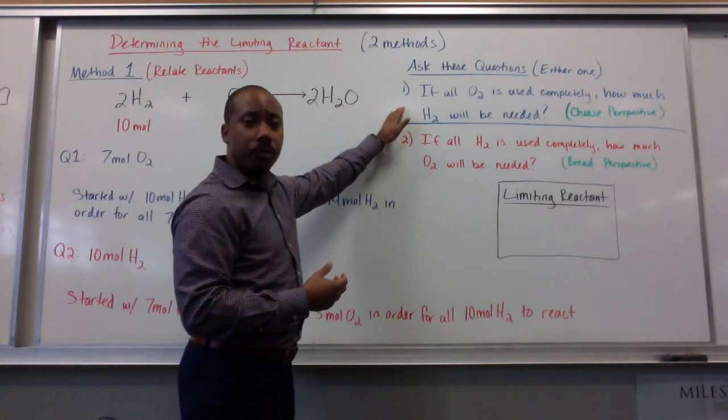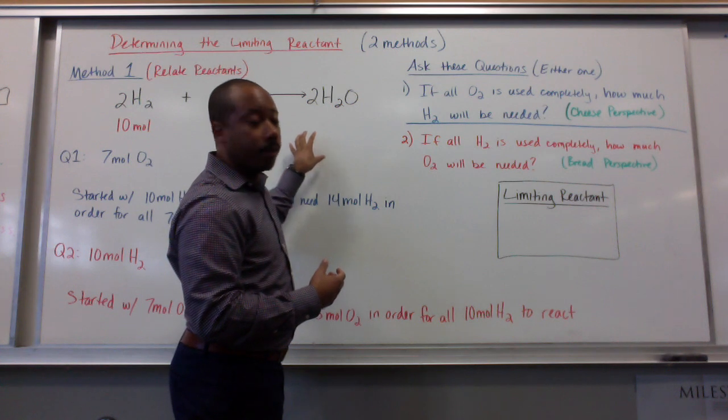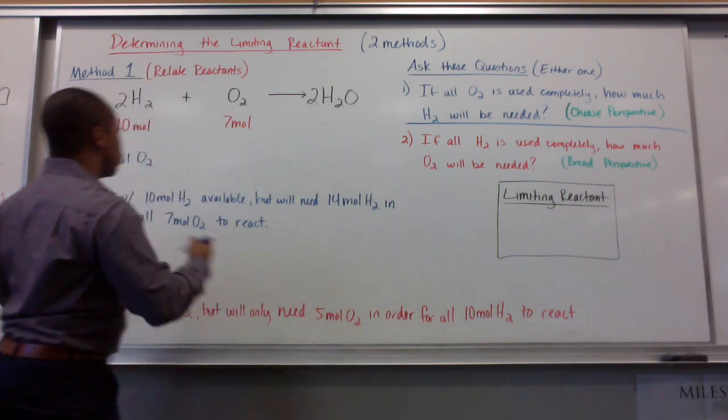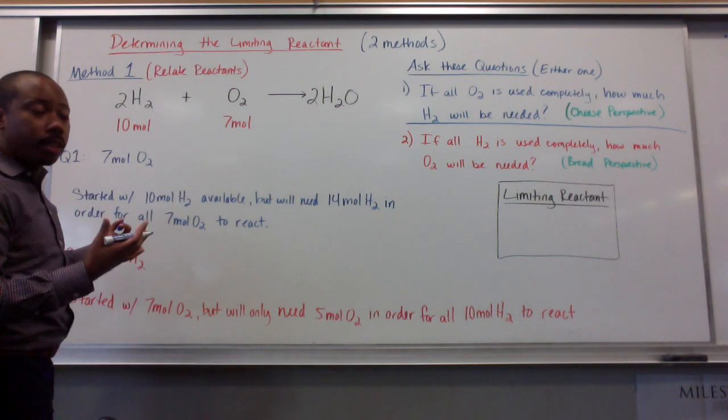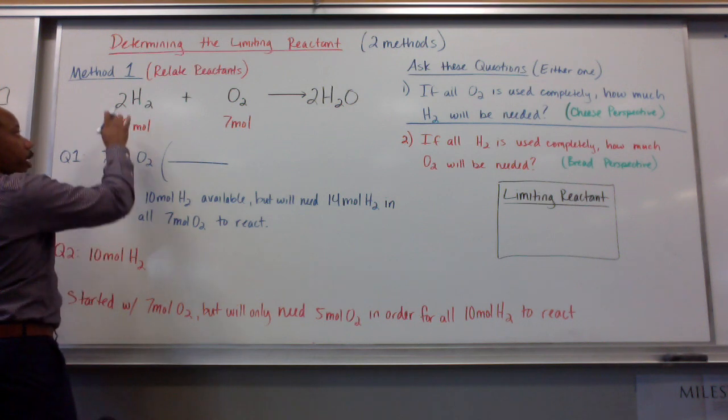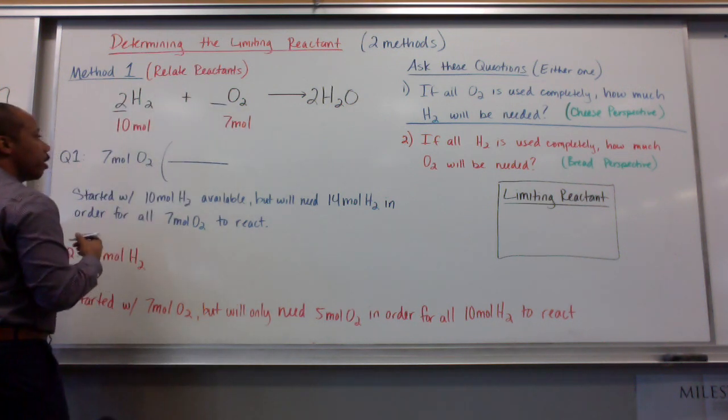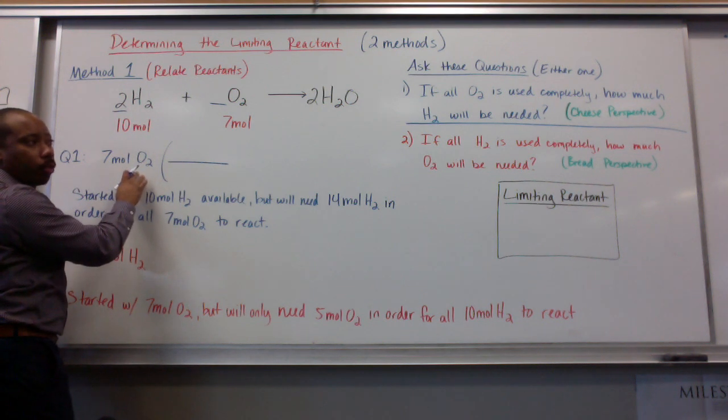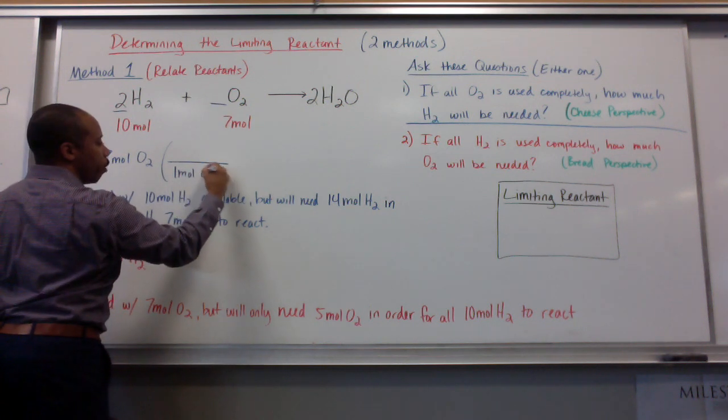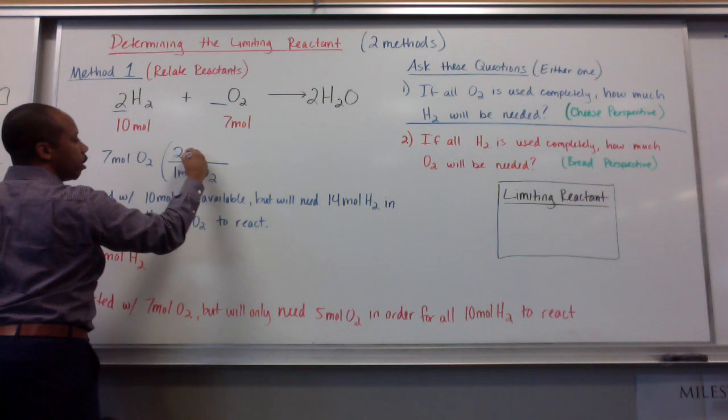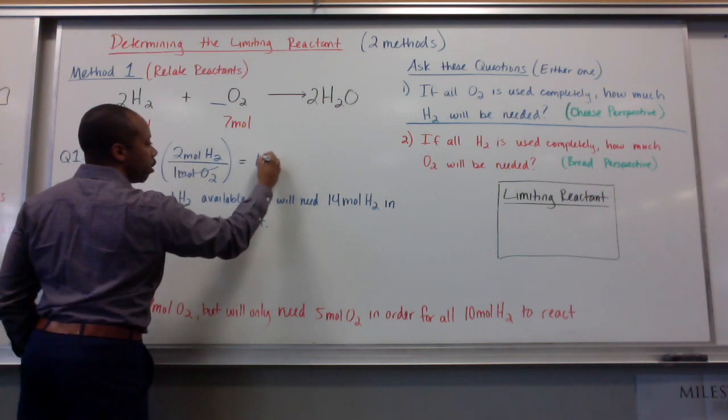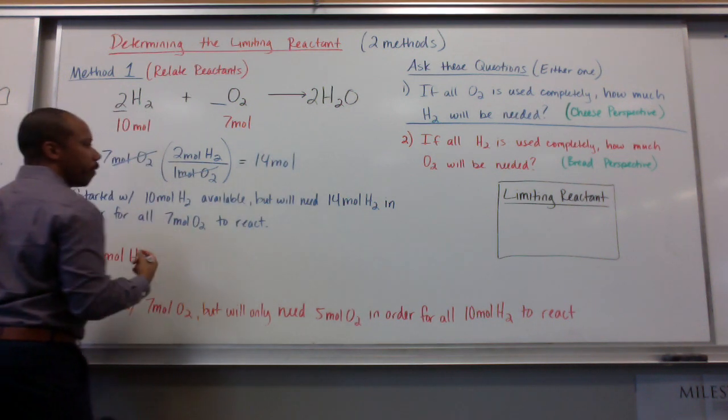Now, how I do this stoichiometrically, I'll show you here for number 1. So if all O2 is used completely, how much H2 will be needed? So we have to relate these two together stoichiometrically. We use the mole ratio to do that. So the mole ratio between these two is given by our coefficients, of course. So if I want all 7 moles of O2 to react, or to be completely used up, then for every 1 mole of O2, I know I'm going to be using or needing 2 moles of H2. Moles of O2 cancel, and I have 7 times 2.